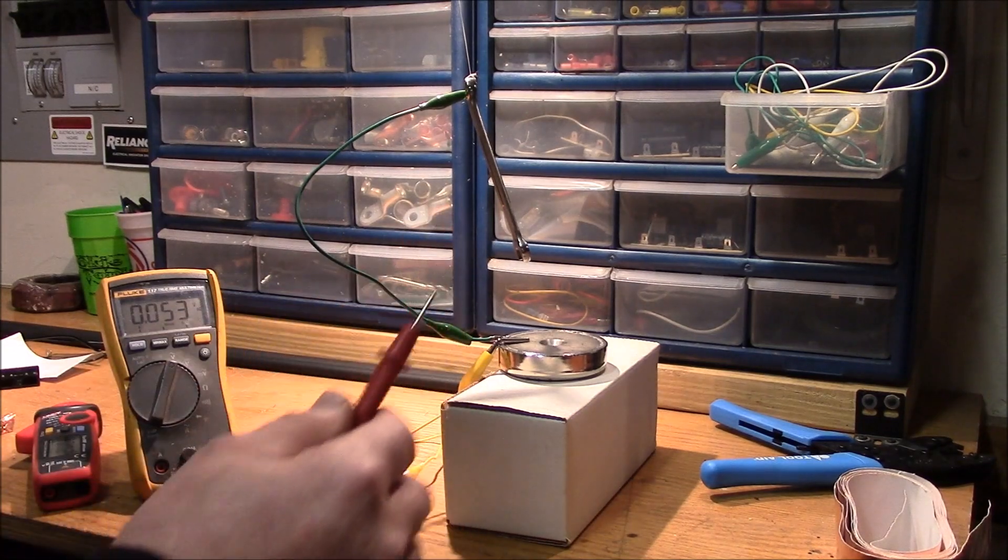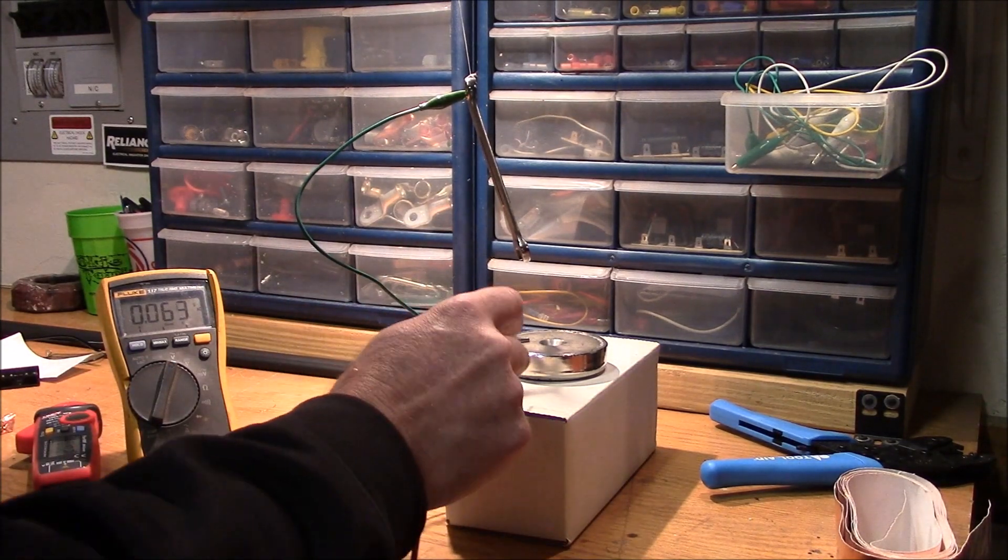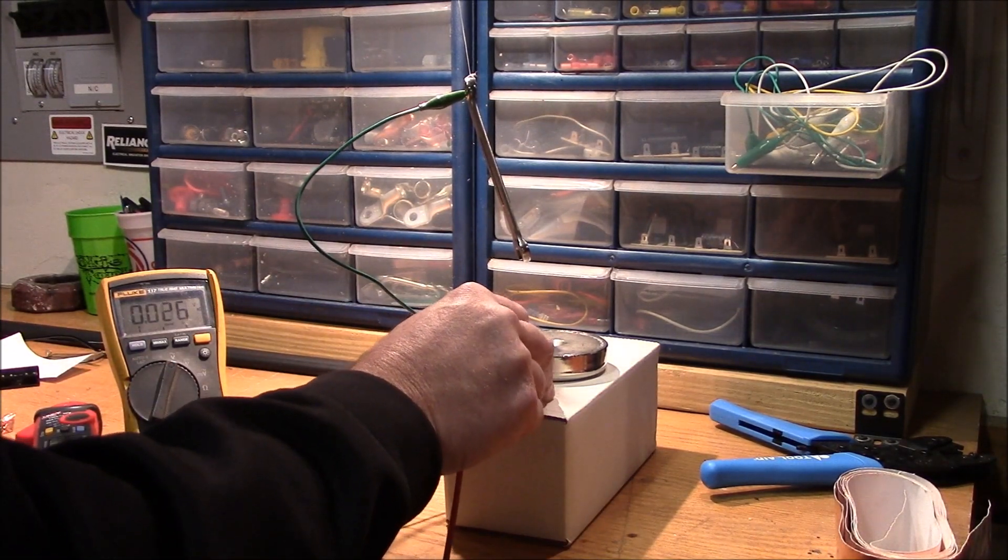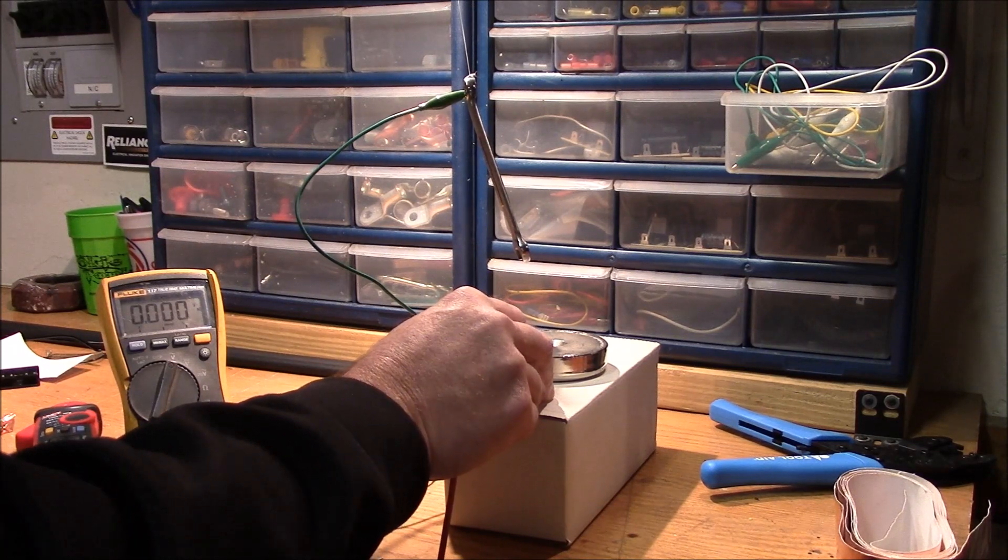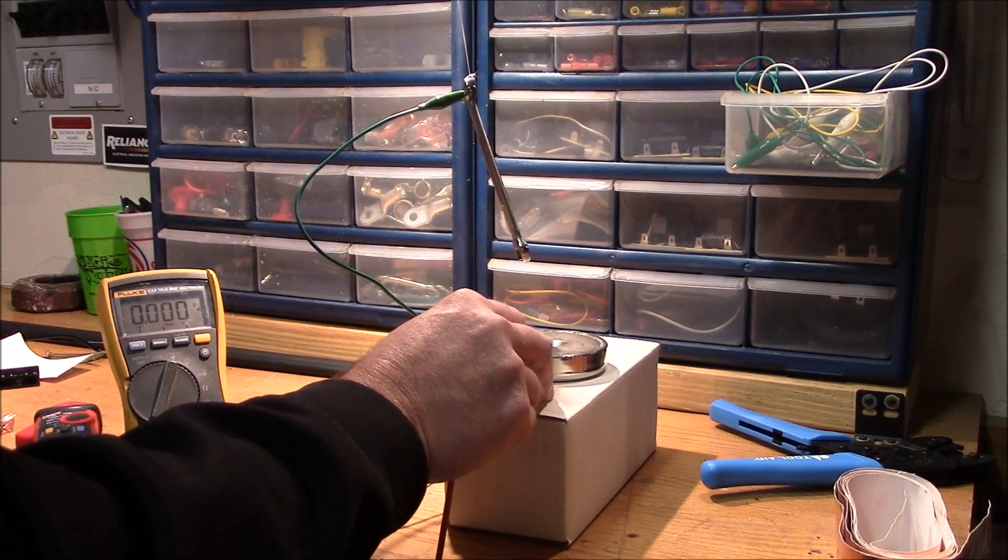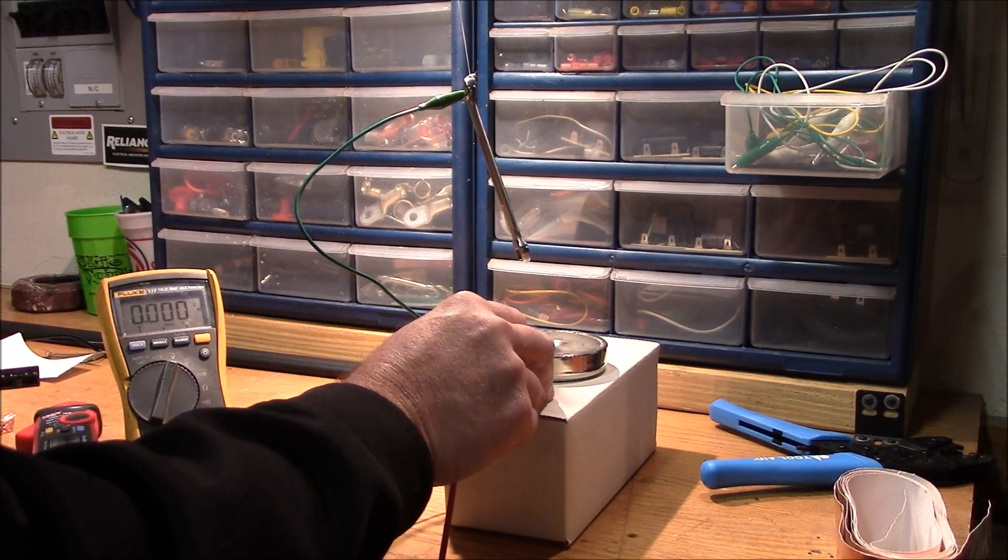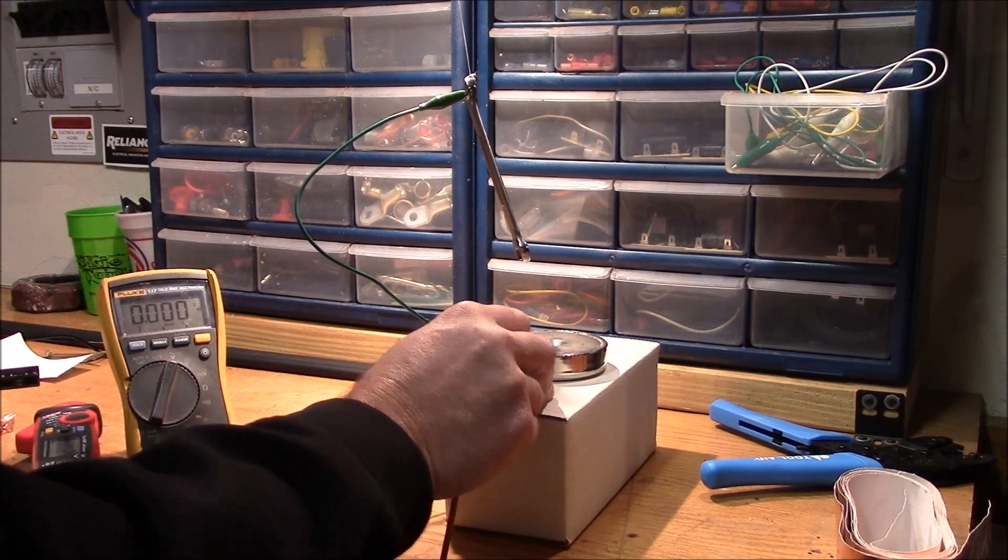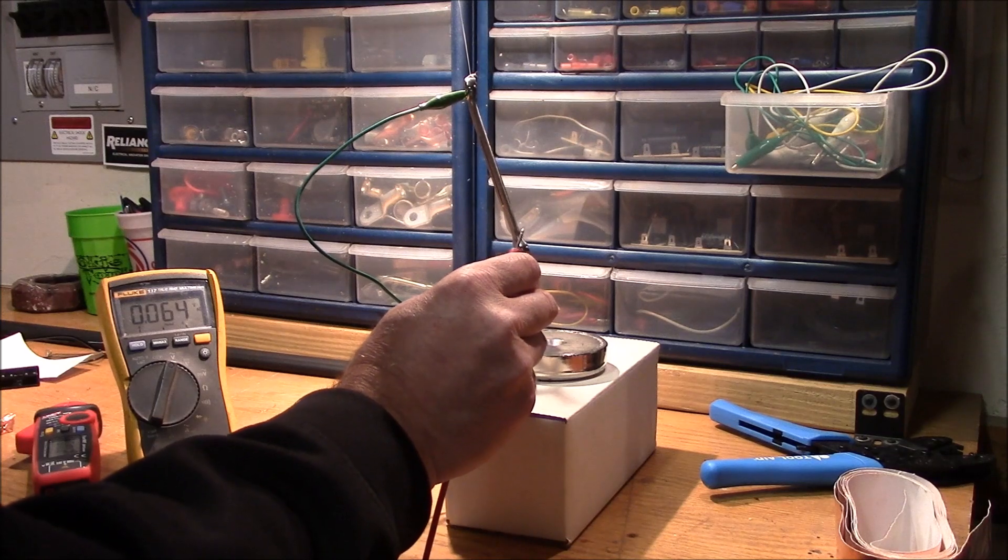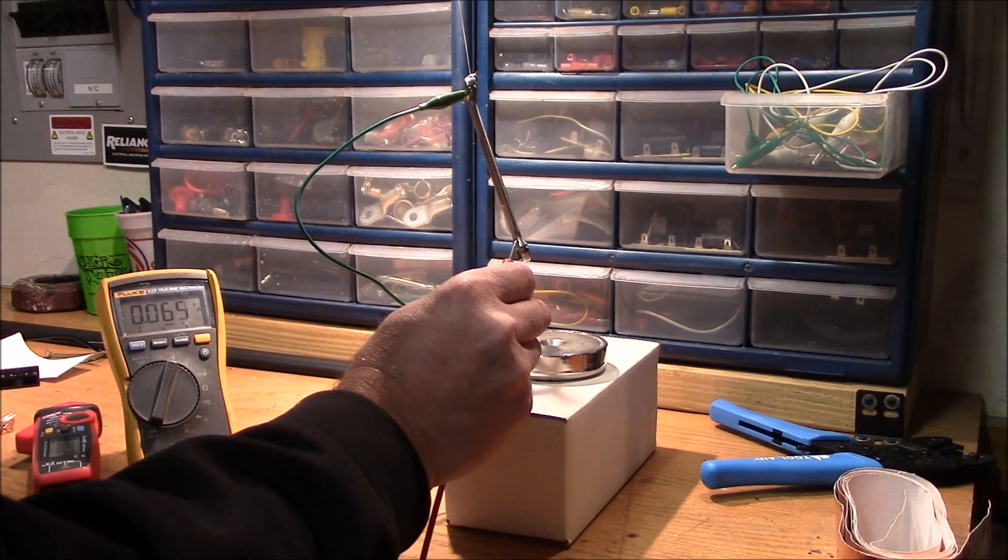And this is just measuring open field here, so let's zero out the meter, basically putting the probes together so there's no difference of potential at all, because it's a dead short through the circuit. Take the lead off, you've got about 0.06 volts AC.